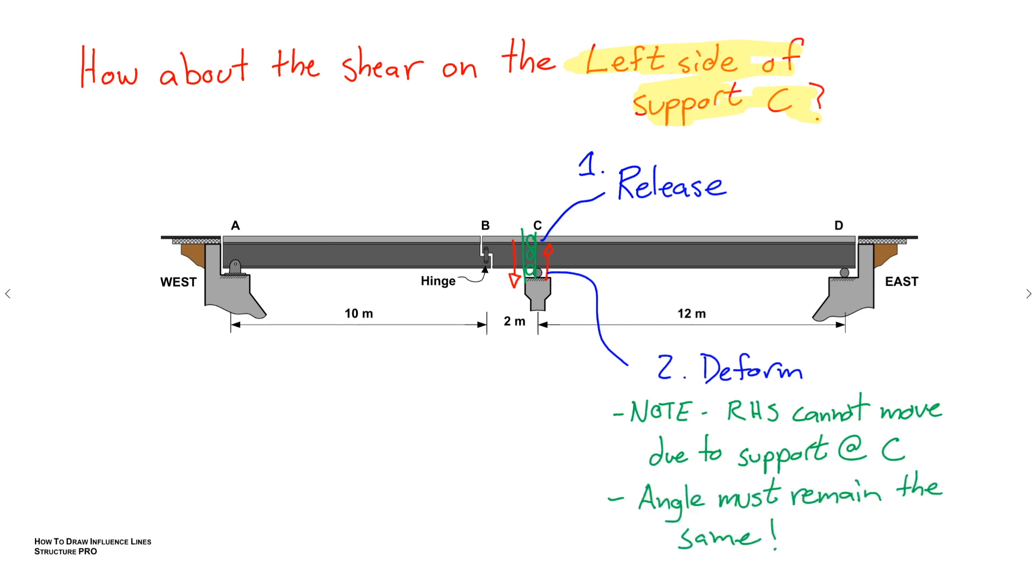Then we also have to recognize that our slope cannot change because of this vertical roller. So on the left side of the roller and the right side, a slope needs to remain the same or our angle. Okay? In this case, it's flat. So it needs to be flat on either side. And the hinge at B is what allows the structure still to be composed of these straight lines in the end.